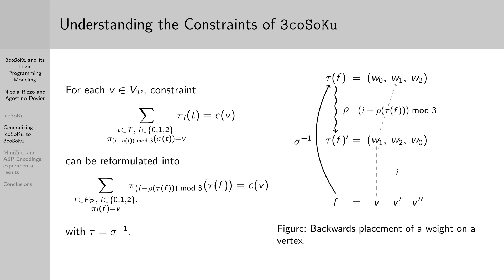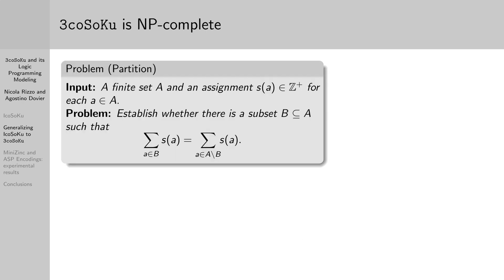The subscript of the summation is not really handy, so the constraints can be reformulated as follows, by starting from the vertex v, and we know the faces where v occurs because it's part of the input, and by tracking down the weight that gets placed there using the inverse of sigma. 3coSoKu is interesting computationally since it is NP-complete. To prove this, we reduce partition, one of Karp's 21 NP-complete problems of 1972.